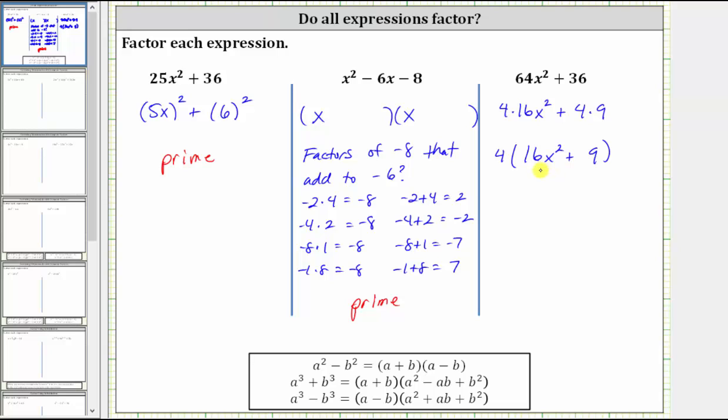And now we see if we can factor further. Inside the parentheses, we have 16x squared plus nine. Both 16x squared and nine are perfect squares. So we might be thinking that we have four times the square of four x plus the square of three. But again, a sum of squares is not factorable, and therefore we cannot factor this expression further.